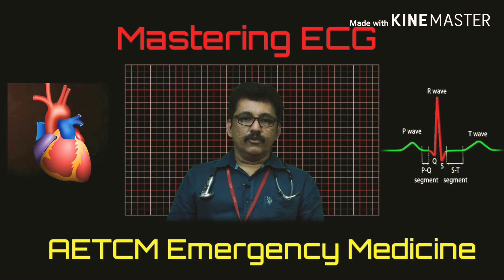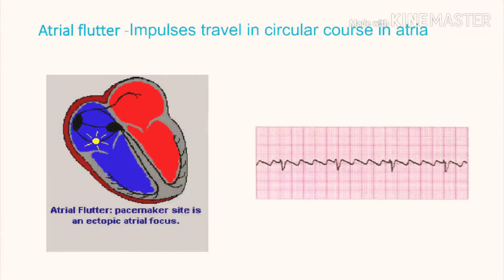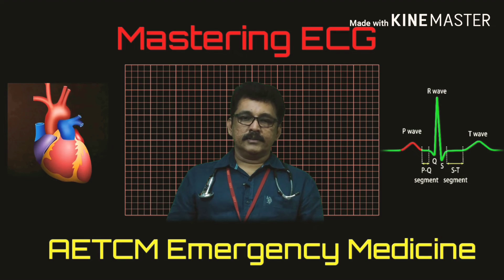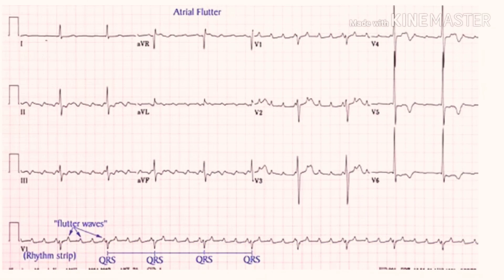This ECG shows a sawtooth appearance between two QRS complexes — a classical finding of atrial flutter. In atrial flutter, the pacemaker site is an ectopic atrial focus. Impulses travel in a circular course inside the atria, producing multiple atrial ectopics and a sawtooth-like appearance. The QRS complex may come regularly, and you may see every three or four P-waves followed by one QRS complex.